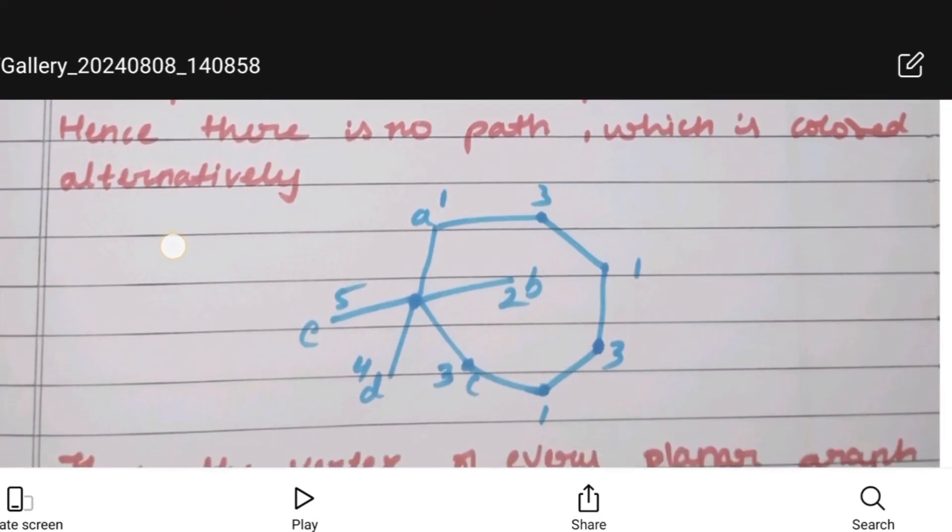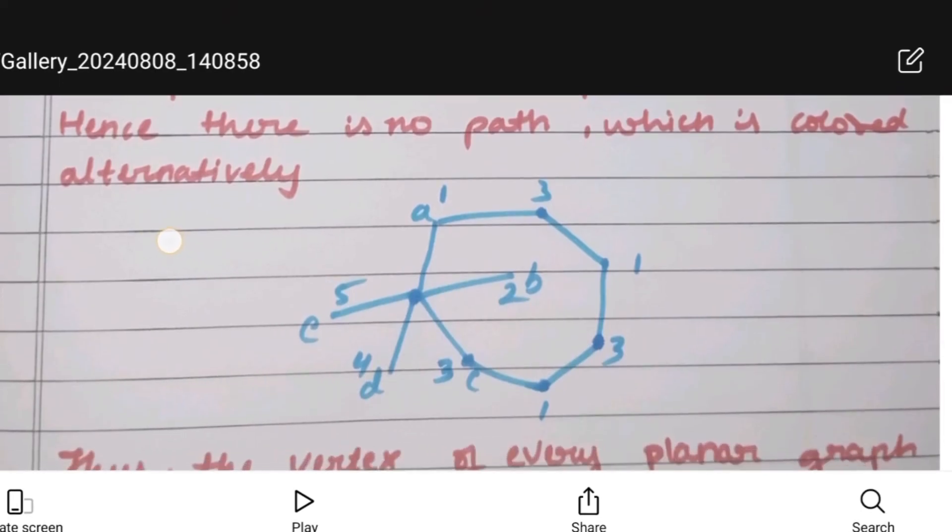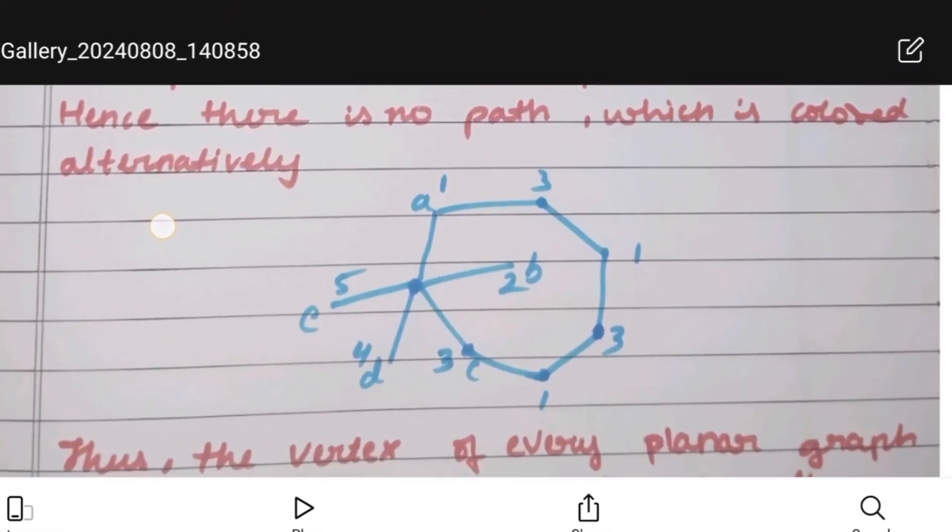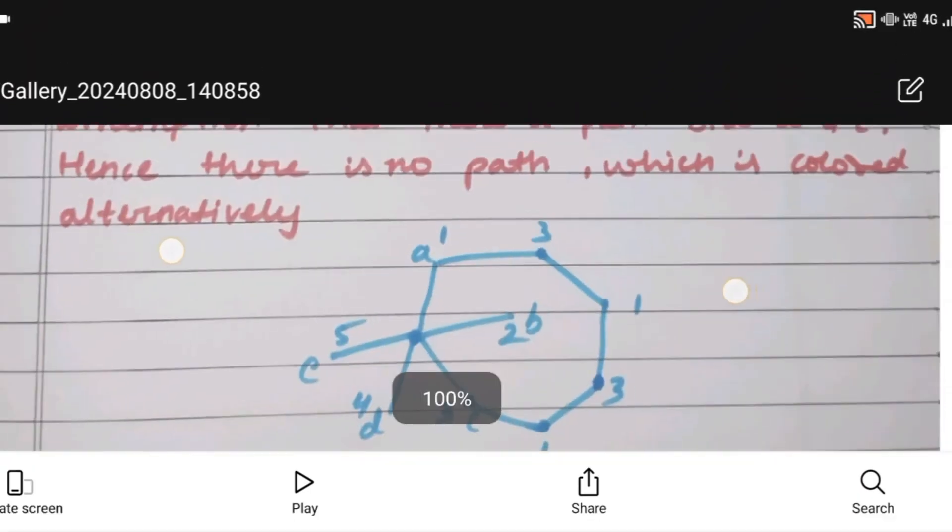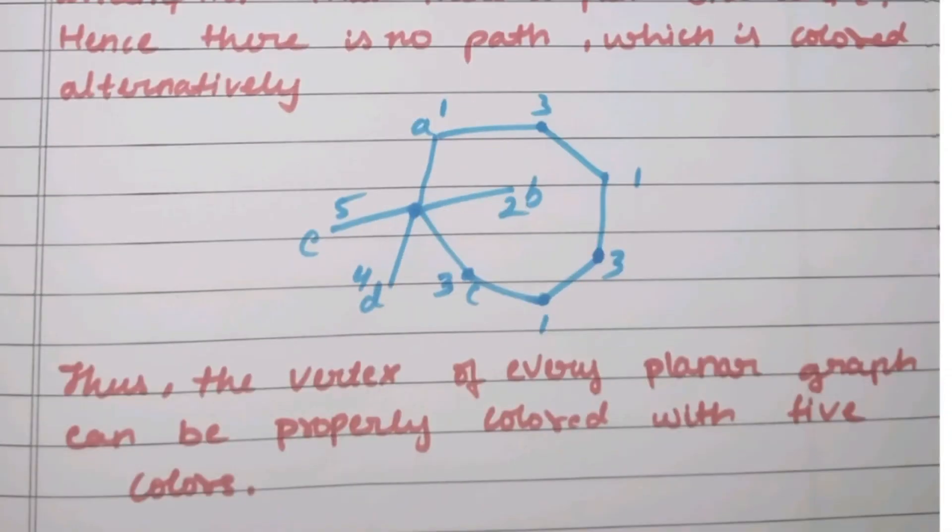We colored with 5 colors: alternating colors 1 and 3 for one path, then vertices B, C, D, and E have colors 2, 3, 4, and 5 respectively. Thank you guys, please subscribe and like the channel.